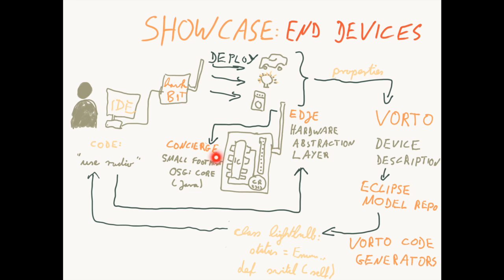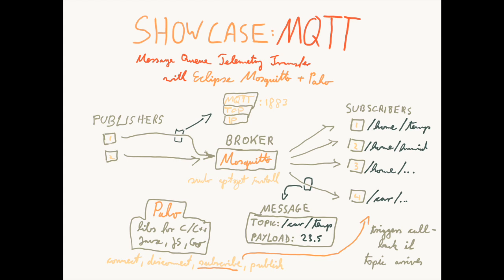On the device, we have Concierge — a small-footprint OSGi core for Java. We would also have projects running like Californium, which is an implementation of the CoAP protocol. Before we dive into the live demo, I wanted to give a brief introduction to the MQTT protocol. MQTT stands for Message Queue Telemetry Transport, and we're going to show its application using Eclipse Mosquitto, which is a message broker, and Eclipse Paho, which is a set of libraries for different programming languages. MQTT sits on top of TCP/IP and the default port is 1883.